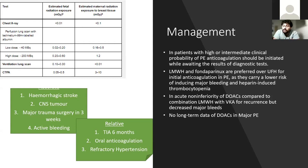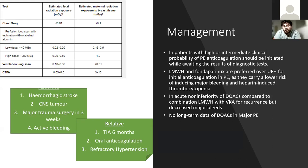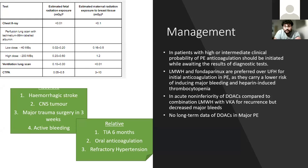PE can present in many ways: new AF, new heart failure — particularly right-sided heart failure signs — and a new right bundle branch block is important. In pregnancy, people often say to do a VQ scan. CTPAs actually offer very little radiation to the fetus but do have an increased cancer risk for the child. However, the main concern is the increased breast cancer risk to the mother, and these risks need to be balanced. If there's a normal chest X-ray, a VQ scan has reasonable sensitivity.